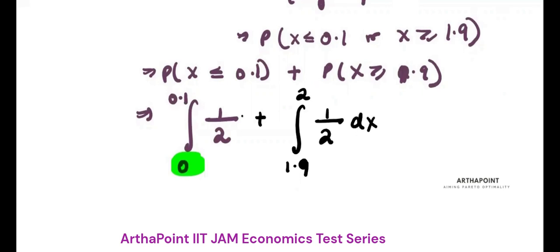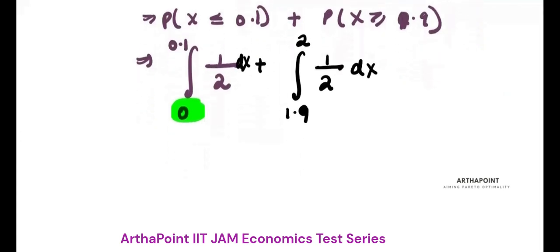Again, my function probability density function is 1 by 2. So because 1 by 2 is just a constant, its integration will simply be X by 2 from 0 to 0.1 plus X by 2 from 1.9 to 2.